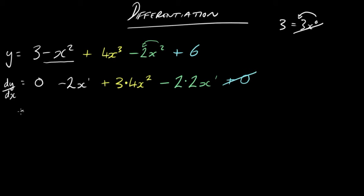Tidy it up a little. It becomes minus 2x plus 12x squared minus 4x. And that's it. You may want to combine the like terms if you like.